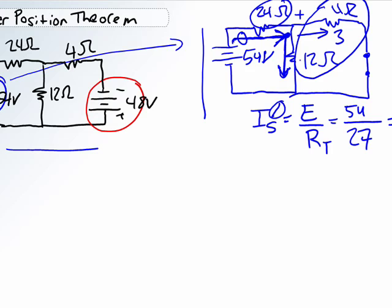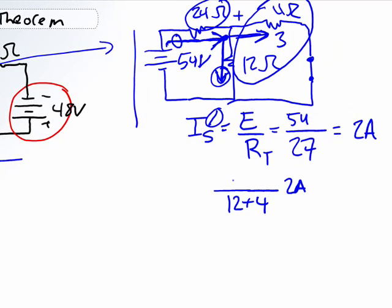This is the one we're interested in. So we have to use our current divider rule now at this point. So current divider rule states that we sum 12 plus 4 and it's 2 amps coming into the node. This is for the I prime through the 12-ohm resistor.